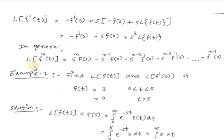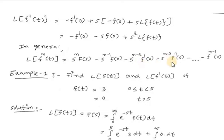So in general we can write Laplace of the nth derivative of f(t) equals s^n·F(s) minus s^(n-1)·f(0) minus s^(n-2)·f'(0) minus s^(n-3)·f''(0) minus ... minus f^(n-1)(0). This is the proof of Laplace of derivatives.